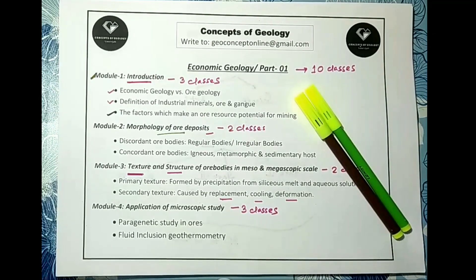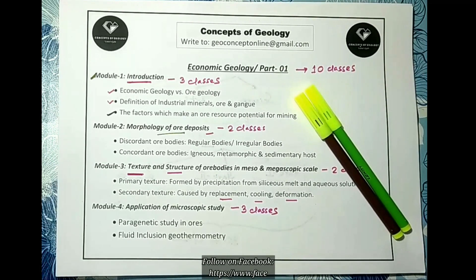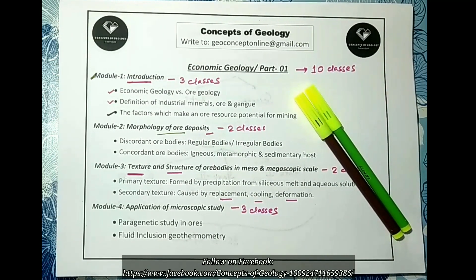Welcome to Concepts of Geology online classes. We are in the domain of economic geology. In the last class we completed the introductory part — what is an ore, the attributes of ore, and its related terminologies. Before going to ore genesis, we should know how ore bodies appear in the field, in hand specimen, and under microscope. In this module we will recognize morphologies and textures, and in the next module on genesis, we will learn why they look that way.